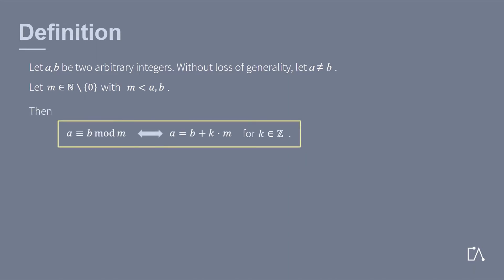Then, a is equal to b modulo m, if and only if, a can be written as the sum of b and a multiple of m.